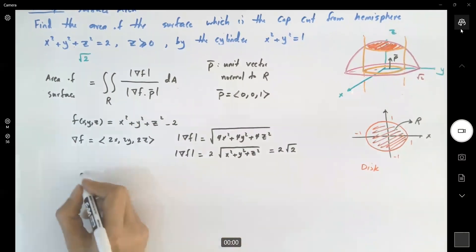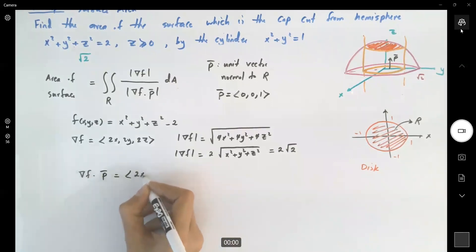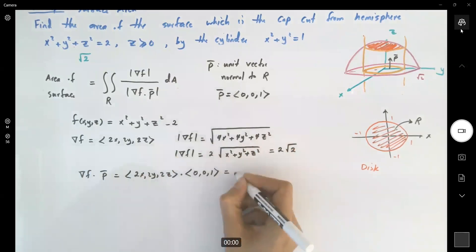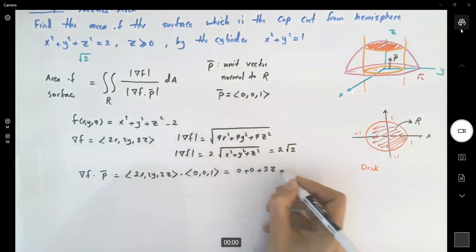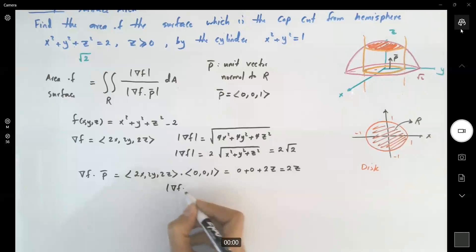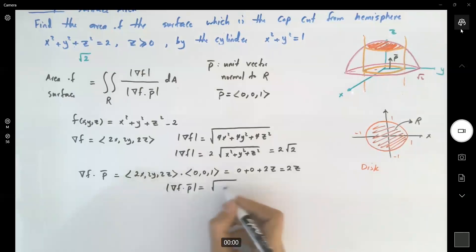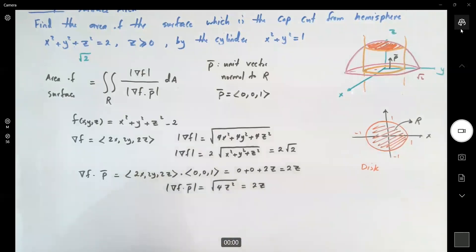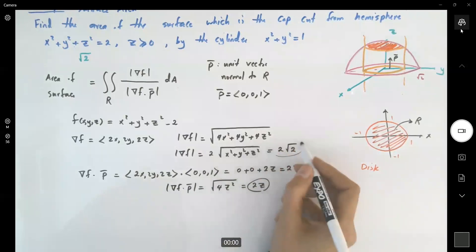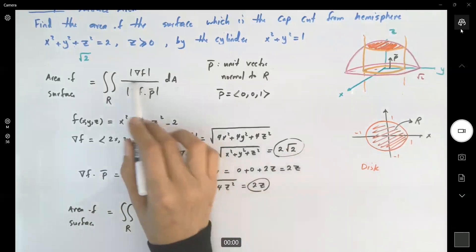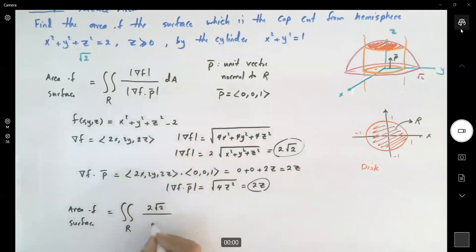Now the gradient of f dot p: this is (2x, 2y, 2z) dot the unit vector p (0, 0, 1), which equals 0 plus 0 plus 2z, so this is 2z. The magnitude of the gradient of f dot p is the square root of (2z) squared, which equals 2z. So the area of the surface equals the double integral over region R of 2 square root of 2 divided by 2z, dA.